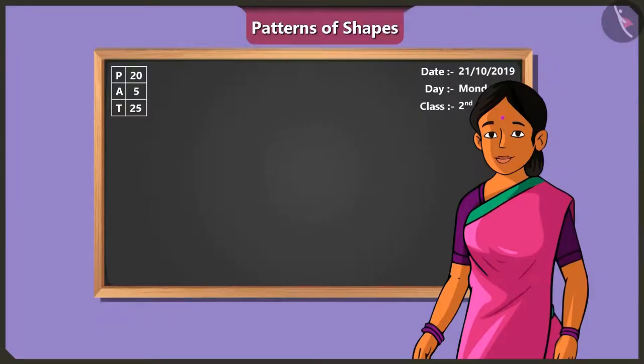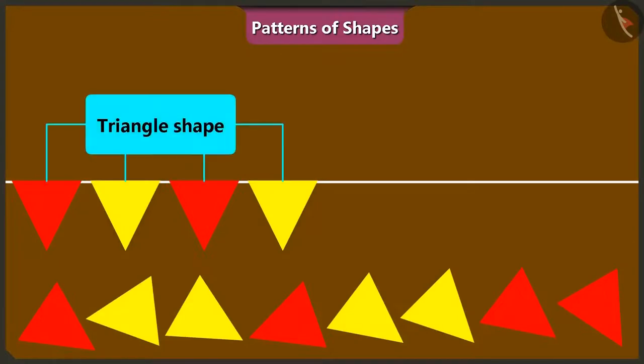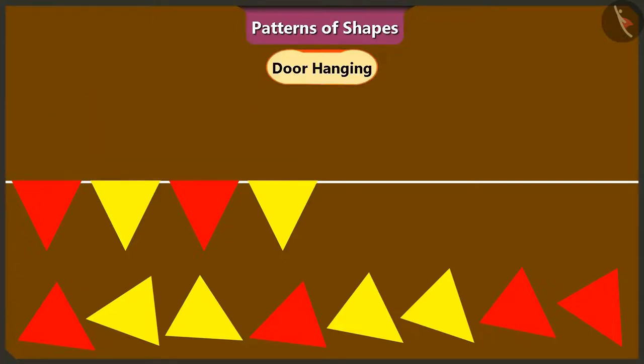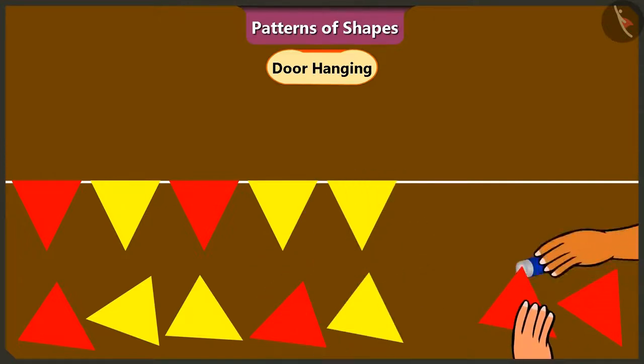Absolutely correct. See this. I have a toran or a decorative door hanging in the shape of a triangle. Vinny and Binny, both of you will complete this toran in this very pattern. Yes, ma'am. Binny, keep putting glue on the triangles and I will keep pasting them like this. Okay. Alright.